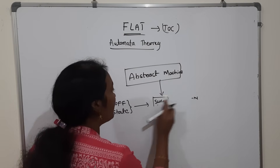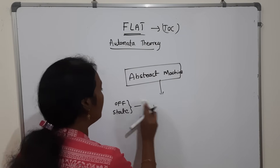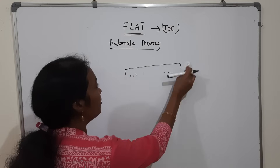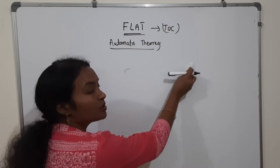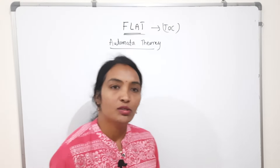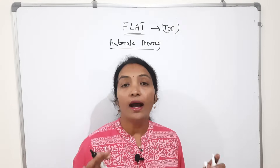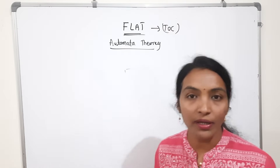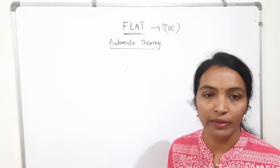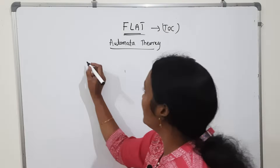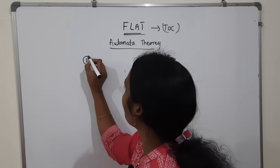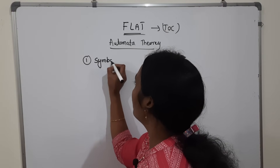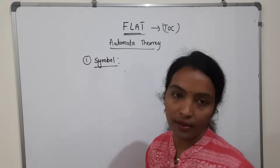This is very important. Mathematically, we will solve every problem in Automata Theory. Once you understand these basic concepts, solving DFA and NFA — deterministic automata and non-deterministic automata — will be easy. Our first representation is symbol.